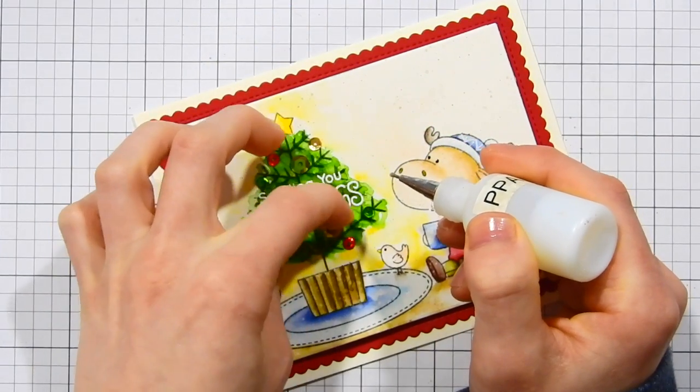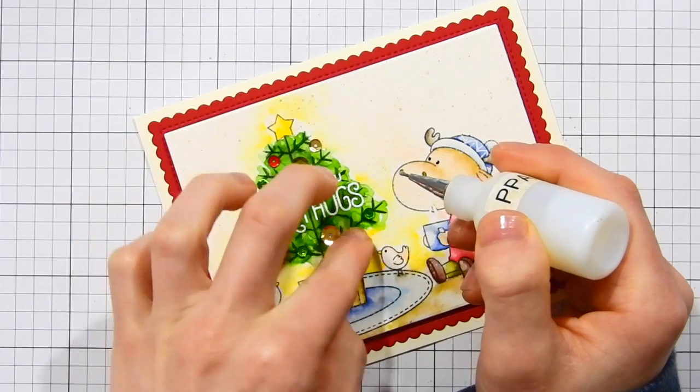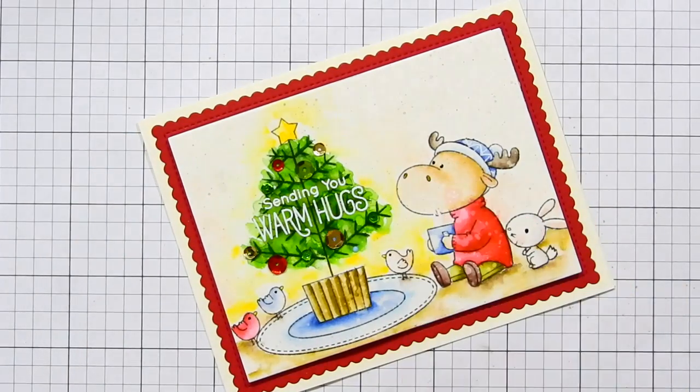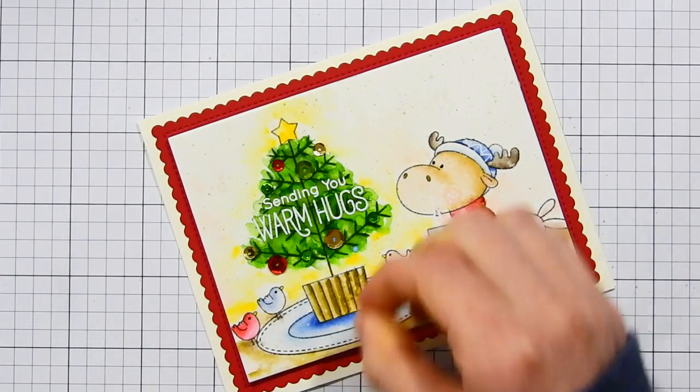So I'm attaching down some Pretty Pink Posh sequins. This is a really pretty Christmas mix both some four millimeter and six millimeter sizes.